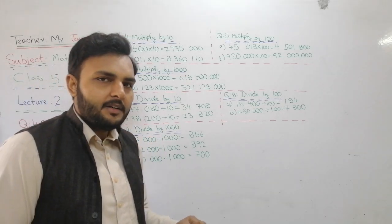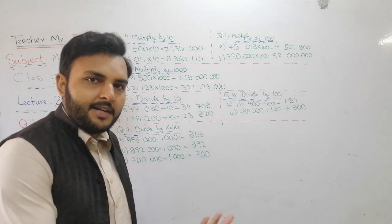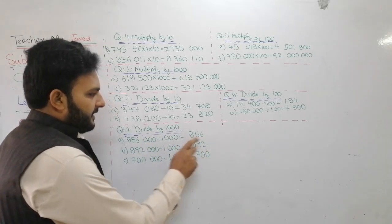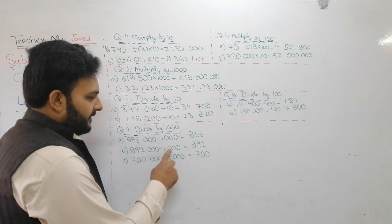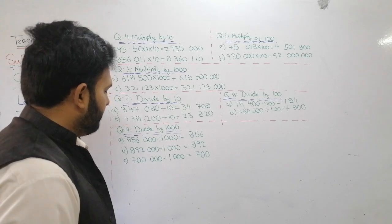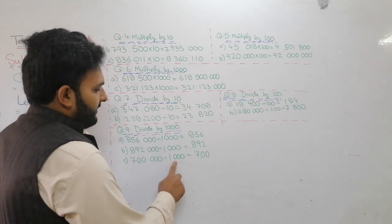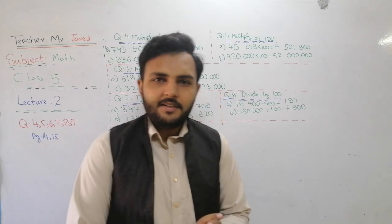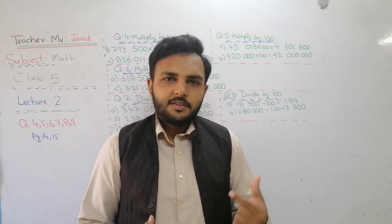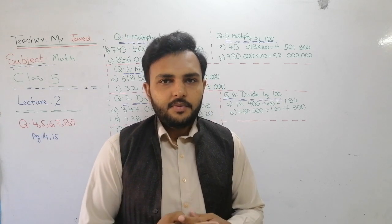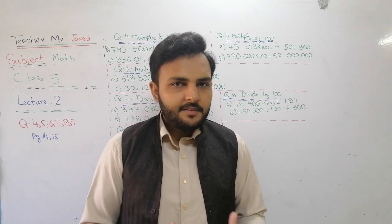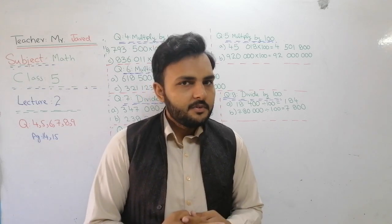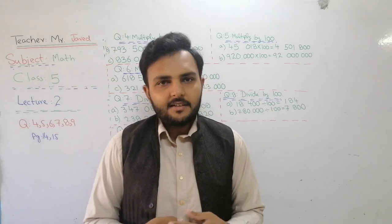When you divide by 1000, the last three zeros are removed from the right side. For example: 8, 5, 6, 000 — remove three zeros, answer is 8, 5, 6. Next: 8, 9, 2, 000 — remove three zeros, answer is 8, 9, 2. And 7, 00, 000 — remove three zeros, answer is 7, 00. So when dividing by 10, remove one zero; by 100, remove two zeros; by 1000, remove three zeros.